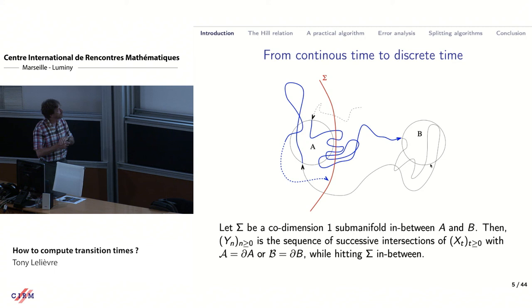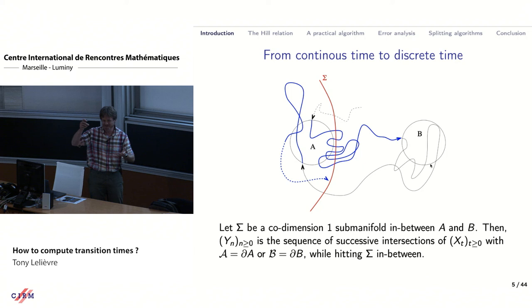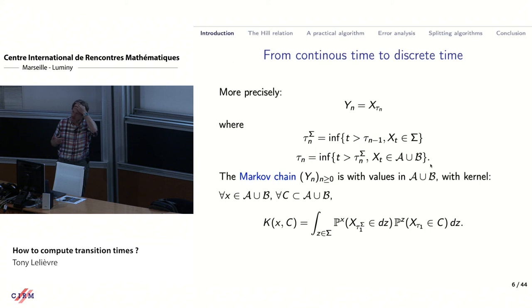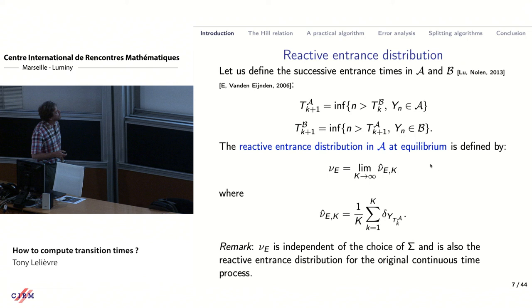In the following I will focus only on Y_n. You can consider from the very beginning that you have only a Y_n taking values in curly A union curly B, and it takes a lot of time to actually leave curly A. This is just a formalization: you have the first hitting time after tau_{n-1} of sigma, and tau_n is the first hitting time of A union B after tau_n of sigma. This is a Markov chain and you can write its kernel explicitly in terms of the transition probability of the original process x_t.